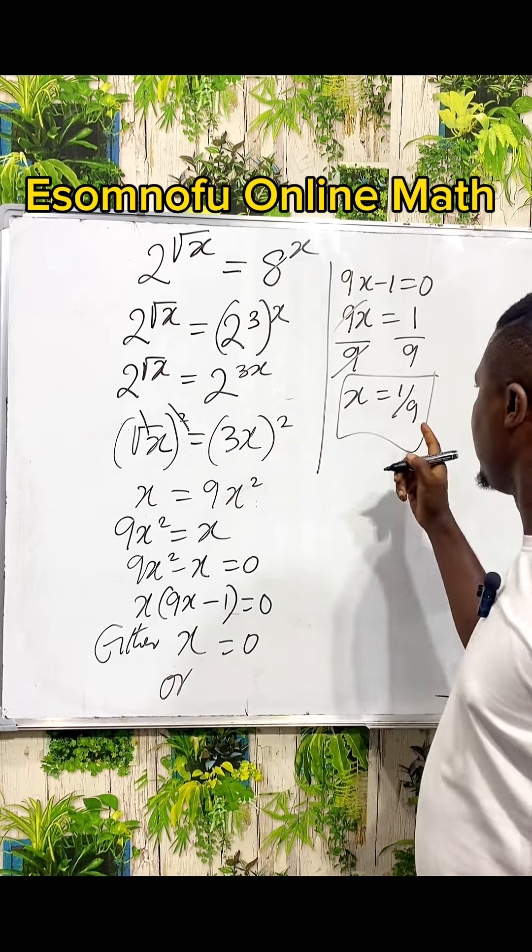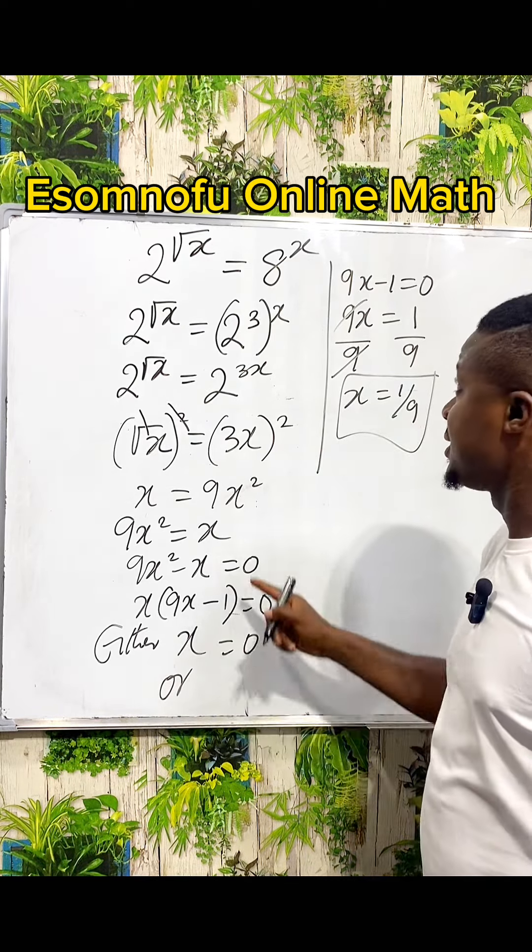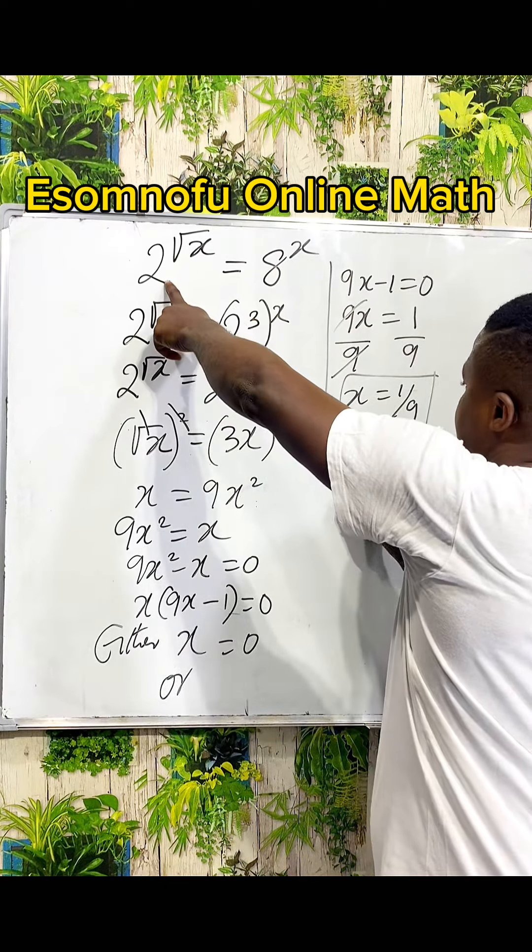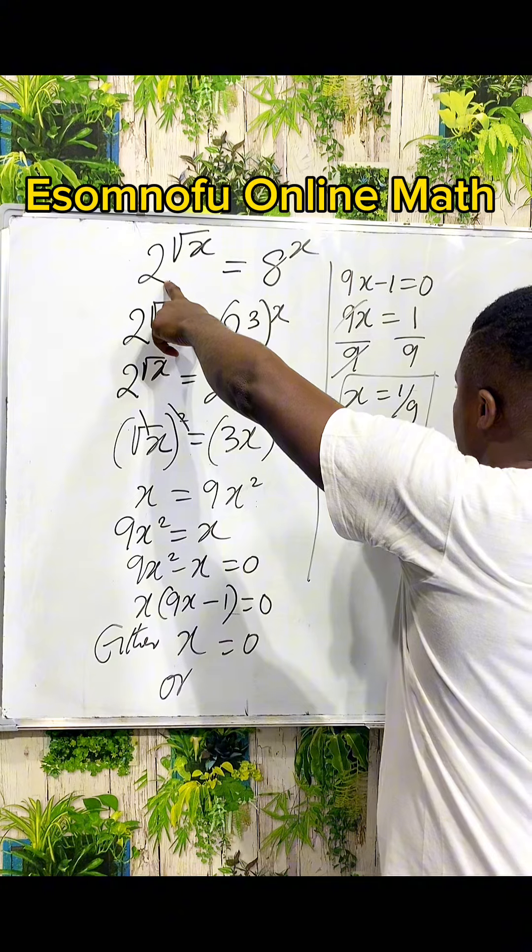This can be a value of x. You can test 1 over 9. Of course it is obvious that zero is a solution to this, but if you put 1 over 9 here...